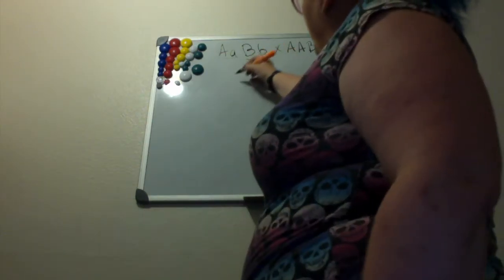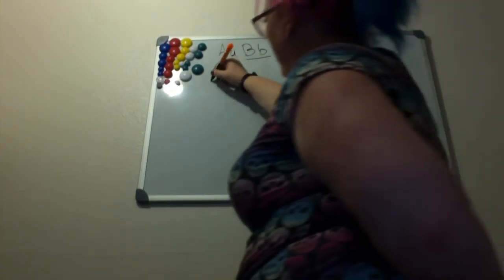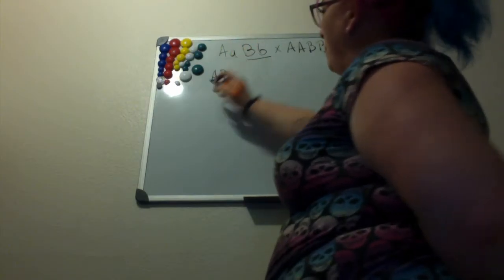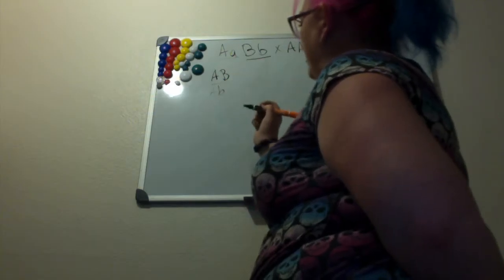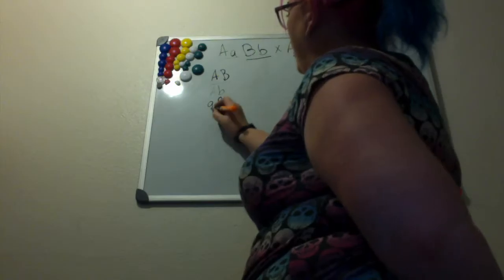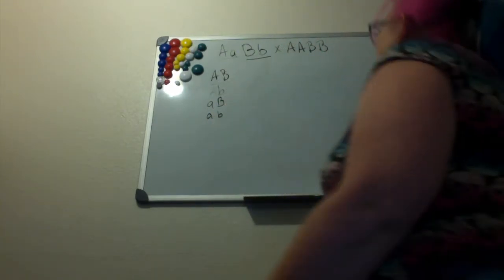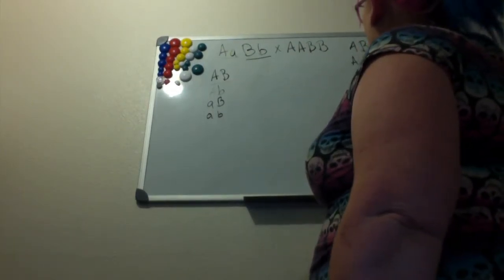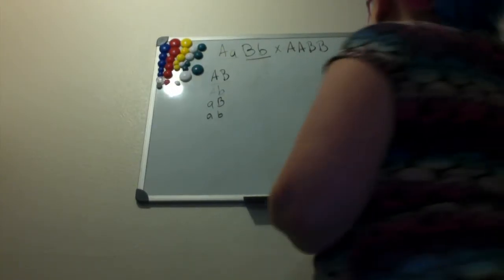What we're going to do is look at our pairings. From this one we could have both dominant, we could have A dominant and B recessive, we could have A recessive and B dominant, or A recessive and B recessive. And obviously on this one, they're going to be dominant for both genes.